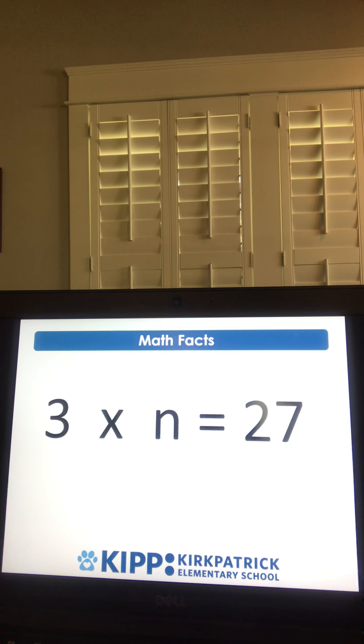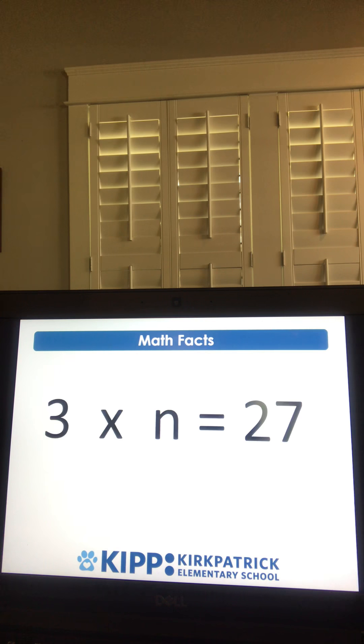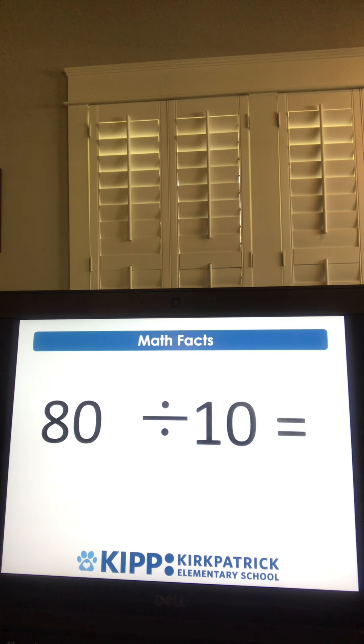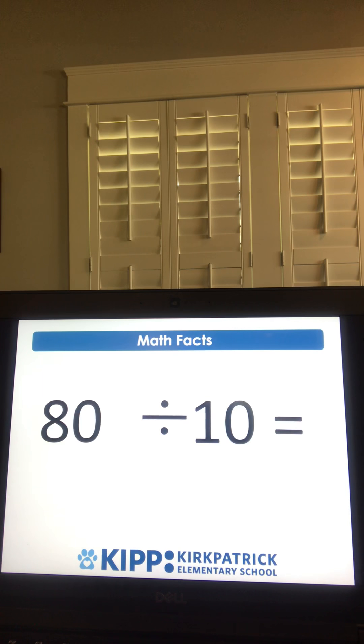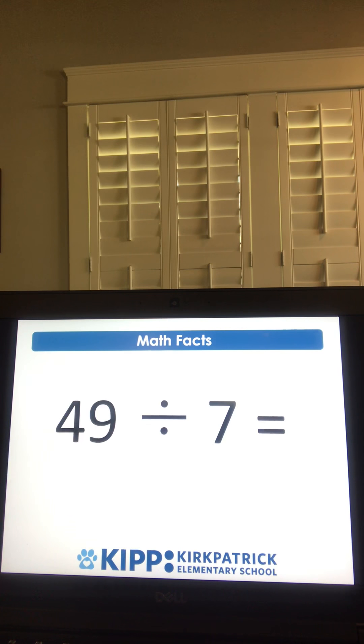Three times N equals 27. What is the variable N equal to? And it would be nine, because three times nine is 27. 80 divided by 10 equals what? That'd be eight. 49 divided by seven is seven.